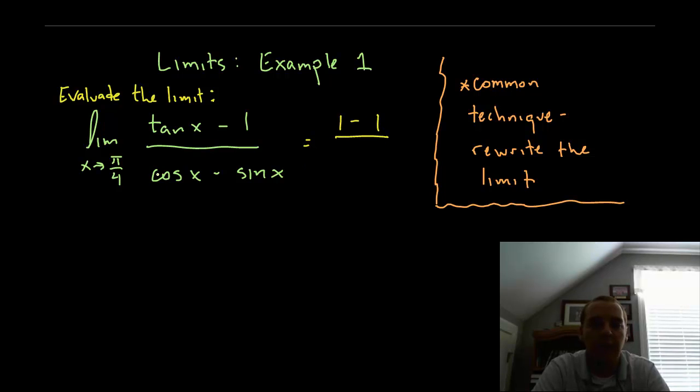So we get 0 over 0, that's an indeterminate form, but we're not going to be so quick to say that means the limit doesn't exist. The function value doesn't exist at pi over 4, but the limit may still exist.